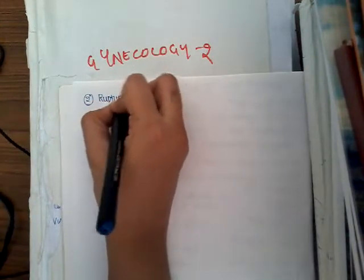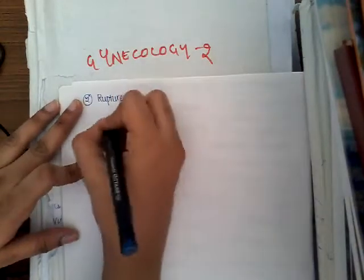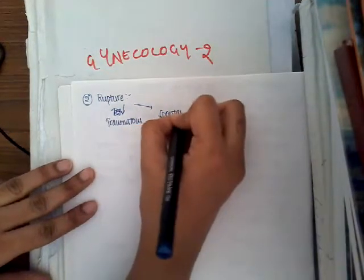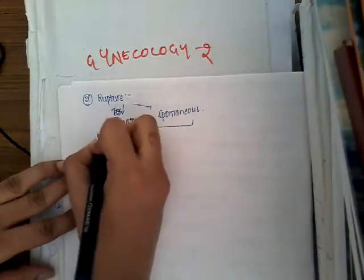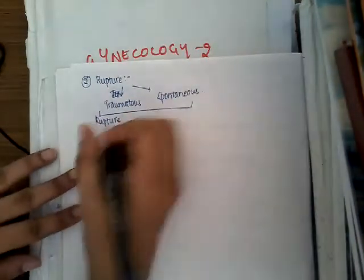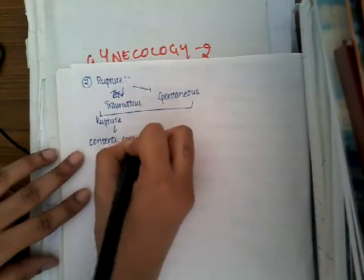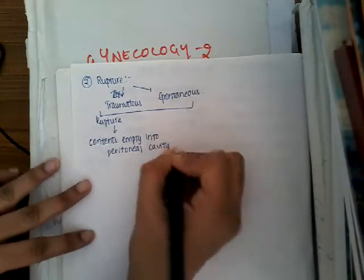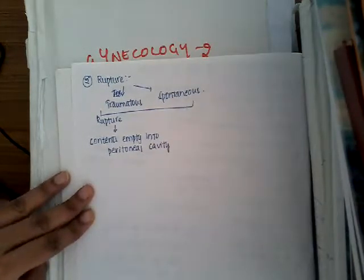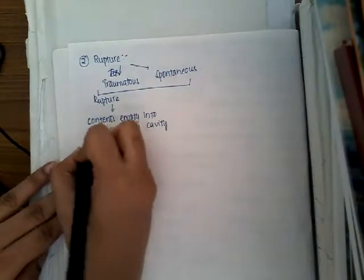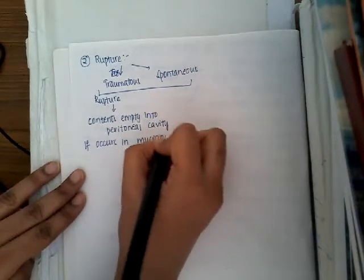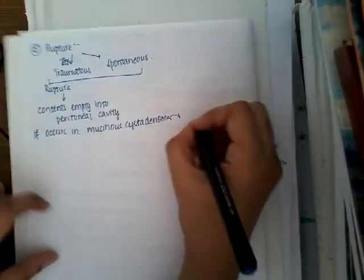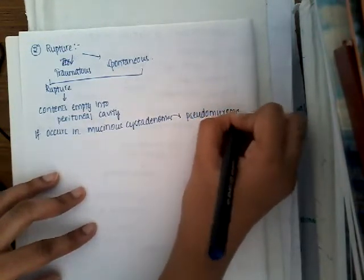The second complication is rupture of the ovarian cyst. This can be traumatic rupture or spontaneous rupture. In either case, all the contents empty into the peritoneal cavity. If rupture occurs in a mucinous cystadenoma, the contents emptying into the peritoneal cavity form something called pseudomyxoma peritonei.